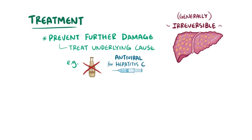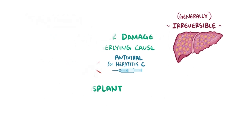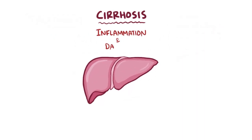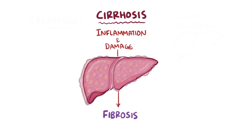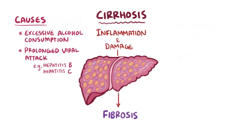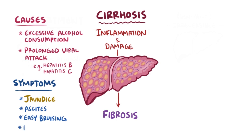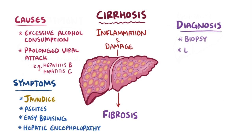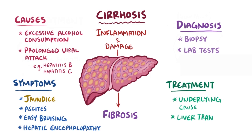With advanced cirrhosis where the liver stops functioning, a liver transplant might be needed. To recap: cirrhosis is when inflammation and liver damage causes the liver to become fibrotic and develop scar tissue. Causes include excessive alcohol consumption or prolonged viral attack like from hepatitis B or hepatitis C. Over time, as the liver becomes less functional, symptoms like jaundice, ascites, easy bruising, and hepatic encephalopathy develop. Diagnosis is done with a biopsy or lab tests, and treatment for advanced cirrhosis is to treat the underlying cause, but sometimes a liver transplant is required.